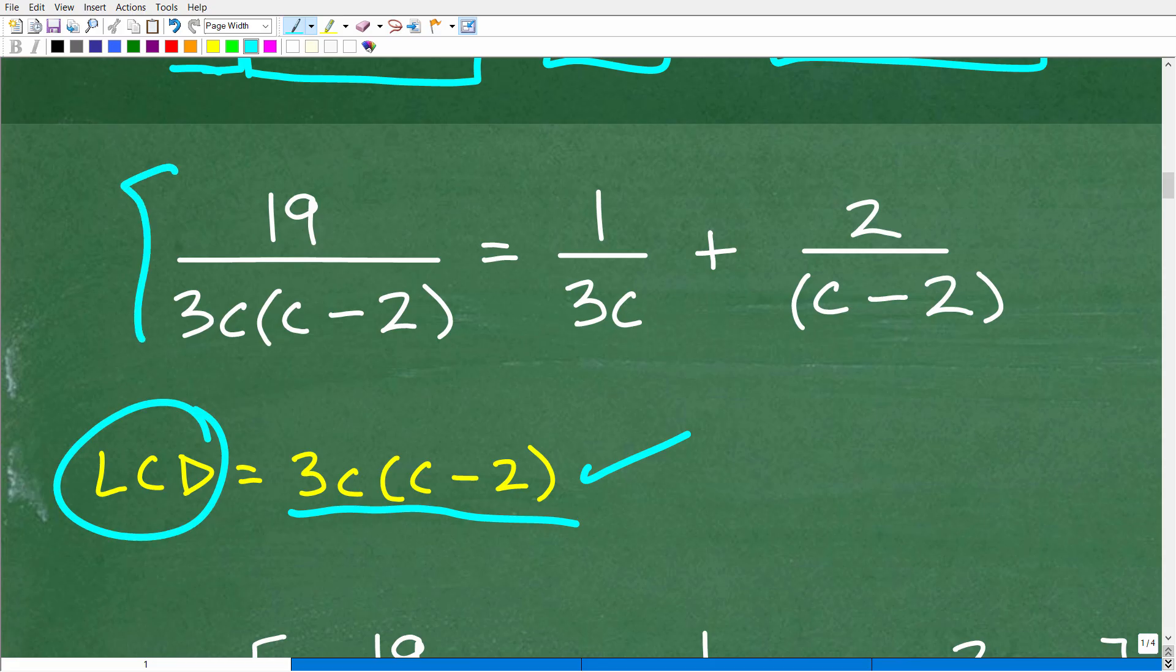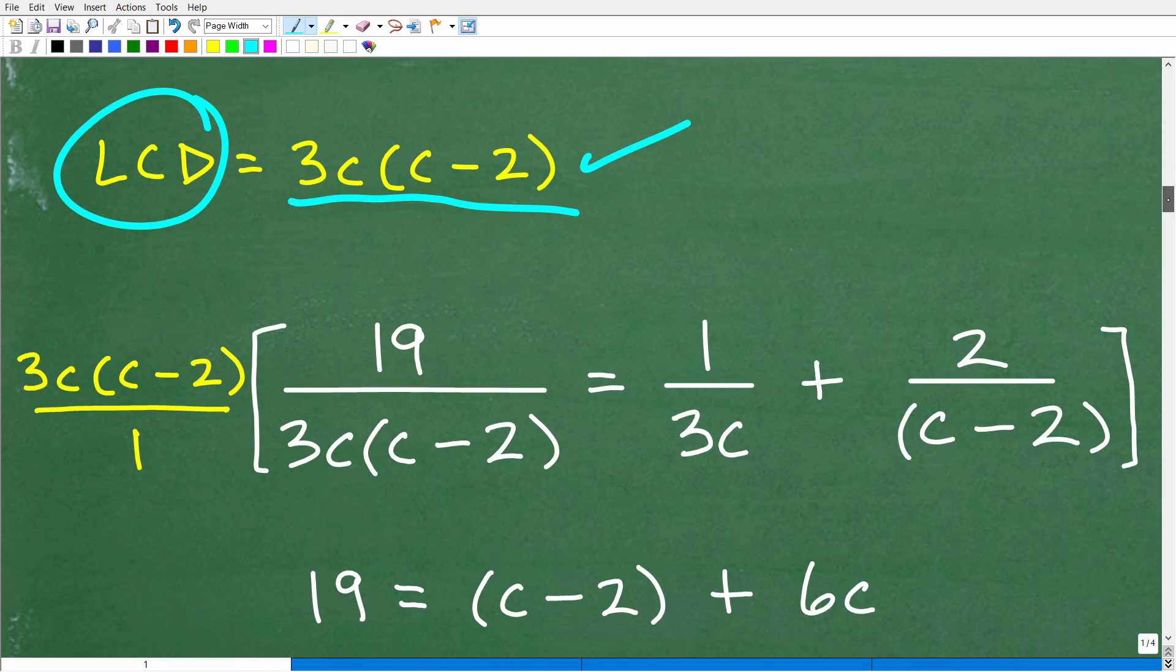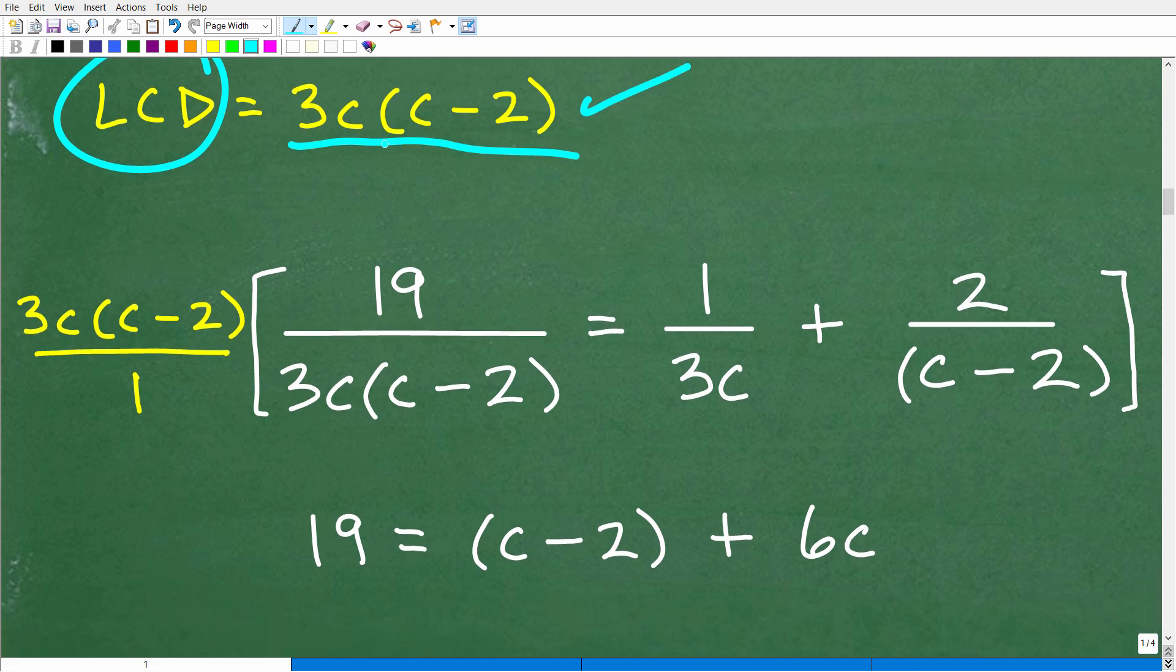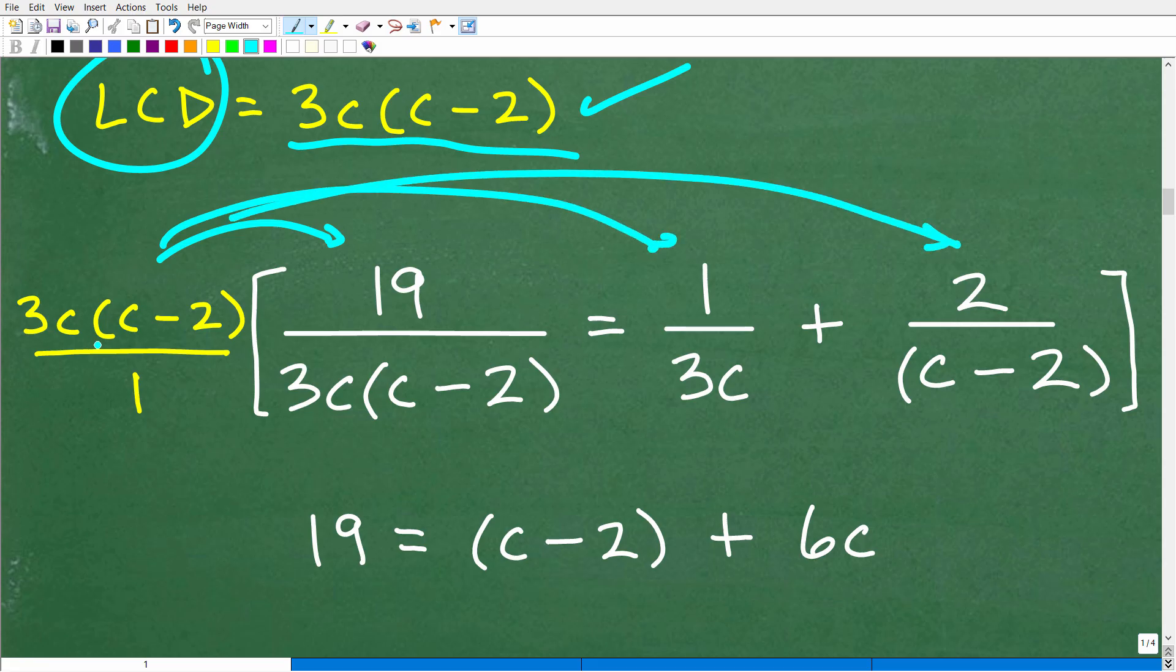All right, now that we know the LCD, we're going to multiply this entire equation by the LCD because when you do that, we're going to clear away all these fractions and it's just going to make things much easier for us. So let's go ahead and take the LCD, which is 3C times C minus 2, and we'll write this as a fraction because we have fractions here, and we're going to multiply the LCD by each term in the equation. All right, so we take this 3C times C minus 2 and we multiply it by 19 over 3C, C minus 2. All these right here cross-cancel, so we're left with 19. And then when I multiply 3C times C minus 2 times 1 over 3C, the 3C is cross-cancel, so I'm left with C minus 2 and then 3C times C minus 2 times this. The C minus 2 is cross-cancel, so I'm going to put 3C times 2, which is 6C.